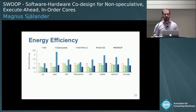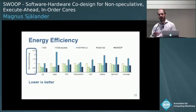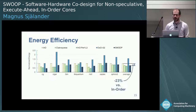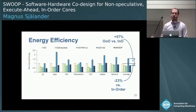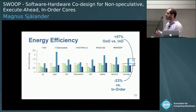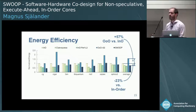Looking at energy — where lower is better — compared to an in-order core, Swoop consumes 23% less energy. The out-of-order core, which was the most performant, uses 57% more energy than the in-order core. So Swoop finds a nice trade-off between improved performance and reduced energy.